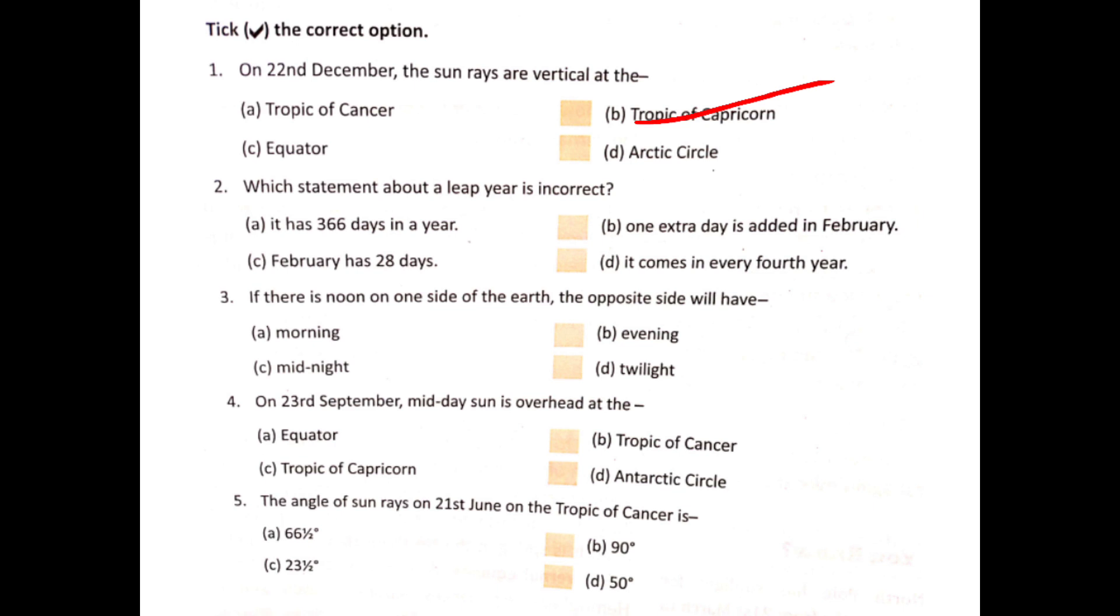Which statement about a leap year is incorrect? It has 366 days in a year. One extra day is added in February. February has 28 days. It comes in every 4th year. Now, our right answer is February has 28 days. In leap year, February has 29 days.